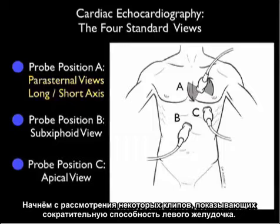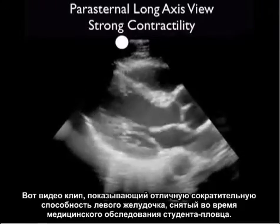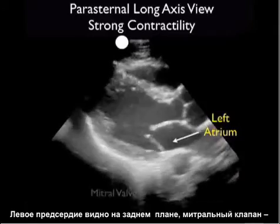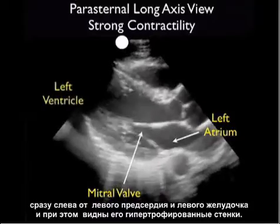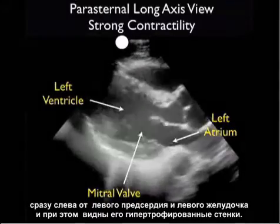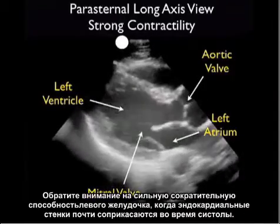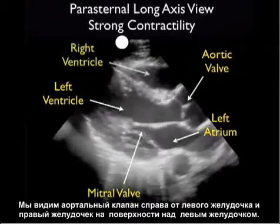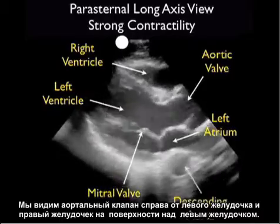Let's begin by looking at some clips going over left ventricular contractility. Here's a video clip showing excellent contractility of the left ventricle as taken from a medical student triathlete. Recall the chambers of the heart as taken from the parasternal long axis plane: the left atrium in a posterior location, the mitral valve just to the left of the left atrium, and the left ventricle with its hypertrophic walls. Notice the strong contractility of this left ventricle as the endocardial walls almost meet during systole. We see the aortic valve to the right of the left ventricle and the right ventricle in a superficial location above the left ventricle.